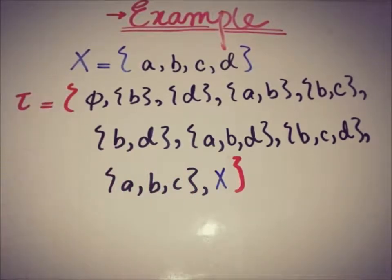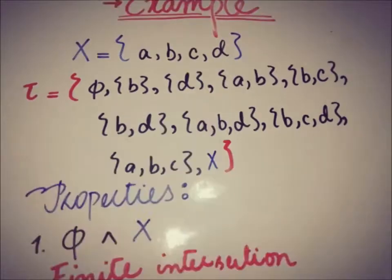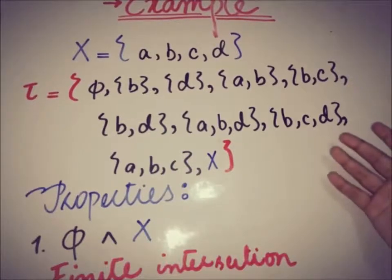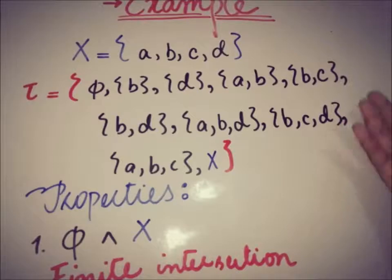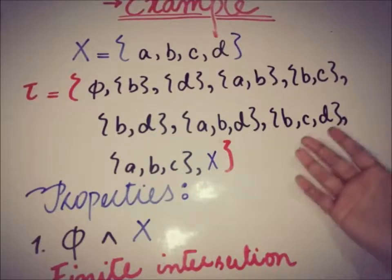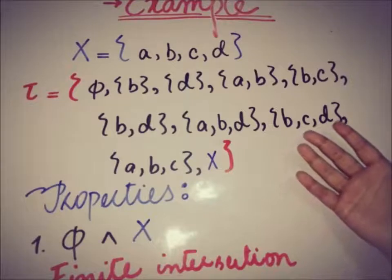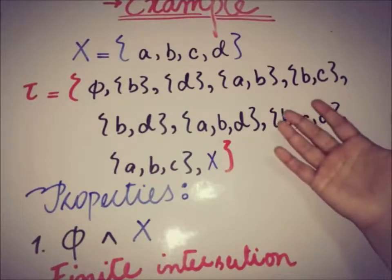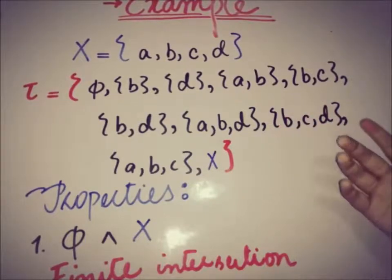And the second one is finite intersection. This depends upon the number of elements that are present in the collection of subsets of X. So we can take finitely many elements from this collection τ and check whether the answer will be in this τ or not.